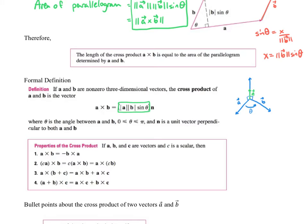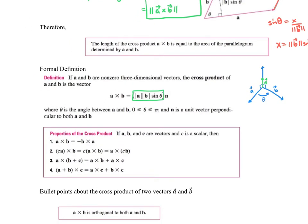I think as we get into the section, it will make more sense. Here are some properties of the cross product; we will get into a number of these as we continue through the section. One of the big ones I want to point out is this first one: the cross product order matters, and the initial point must be the same.